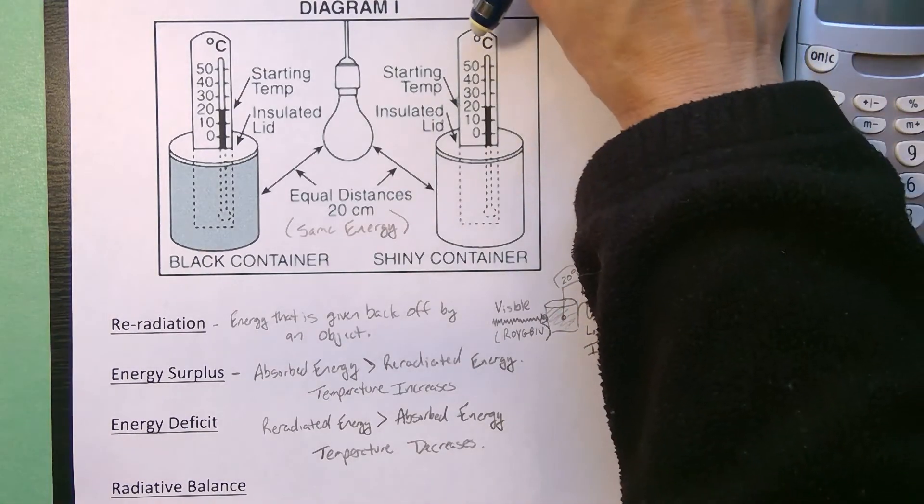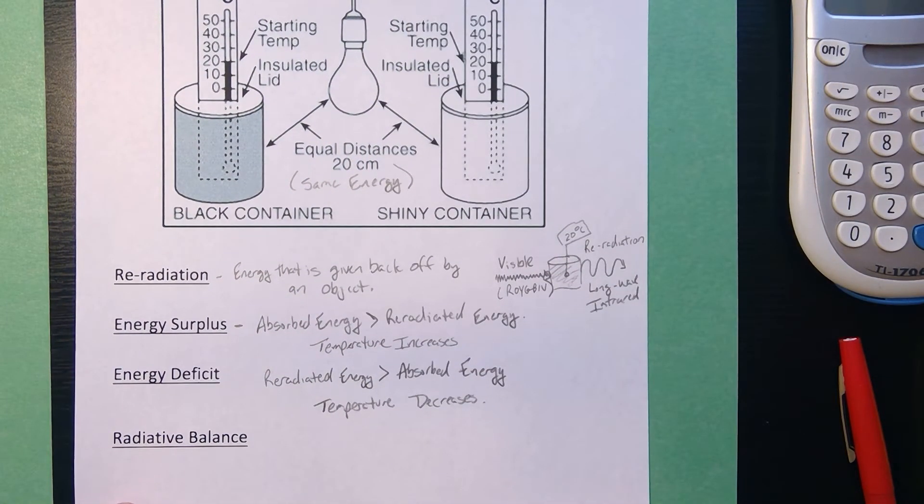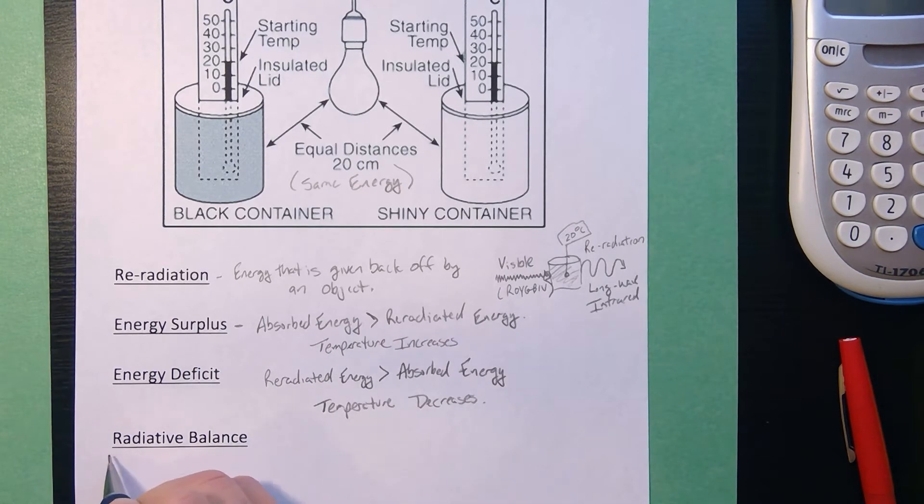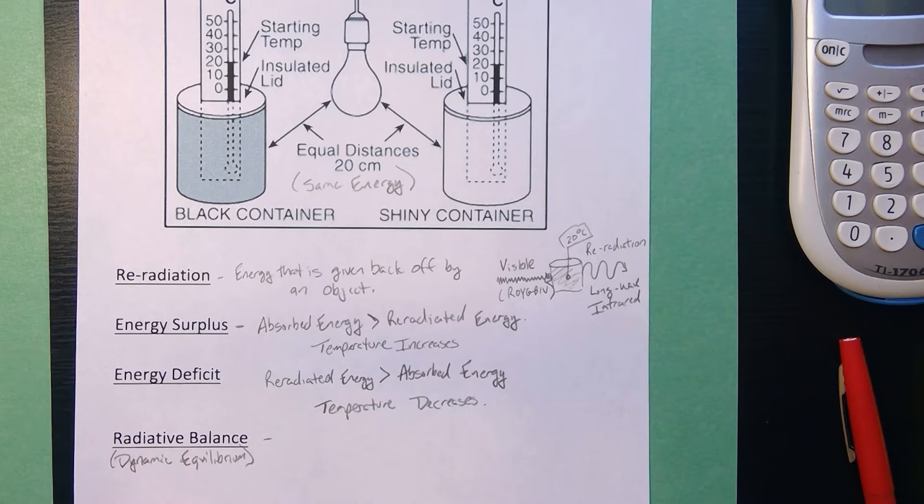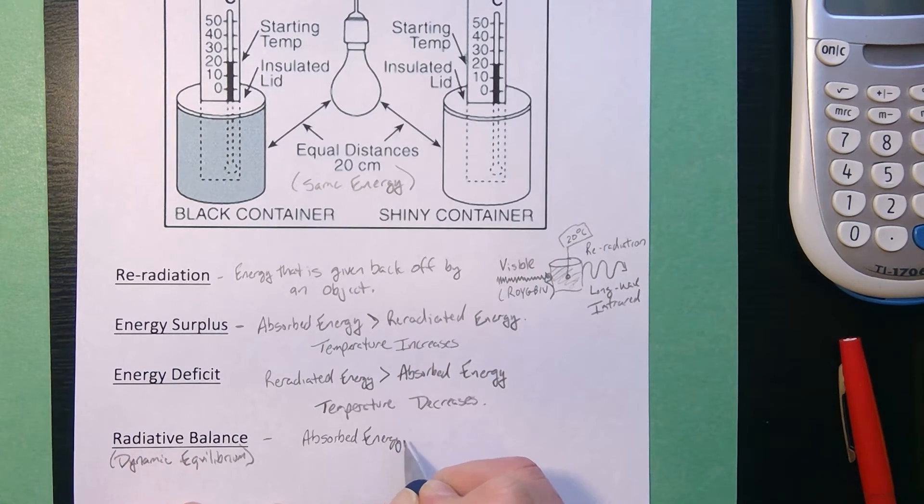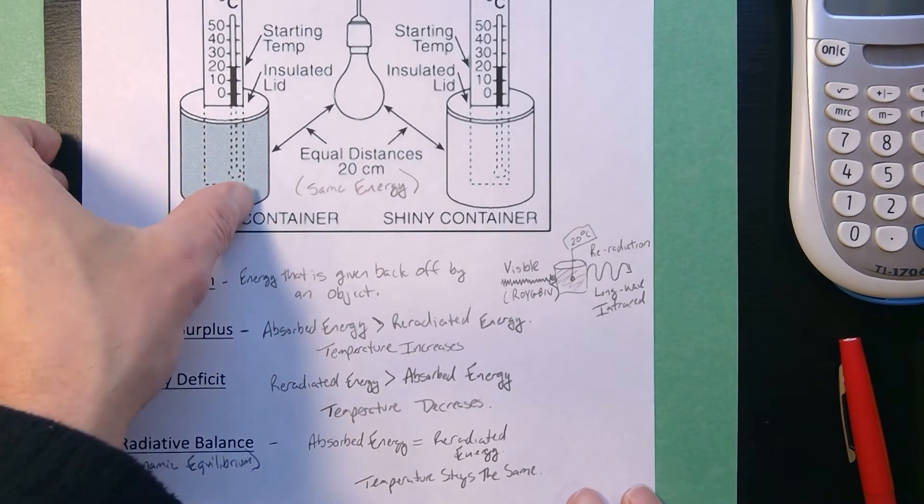Now, if we left those two containers in the light long enough, and we'll probably do this in class just to show you that it works, you can achieve a state of what's called radiative balance. Radiative balance is an example of a dynamic equilibrium where you have opposite processes balancing each other. So, if you reach a radiative balance, that would mean that the absorbed energy would equal the re-radiated energy. And under those conditions, the temperature stays the same. So, if something's in radiative balance, it's going to have a constant temperature.